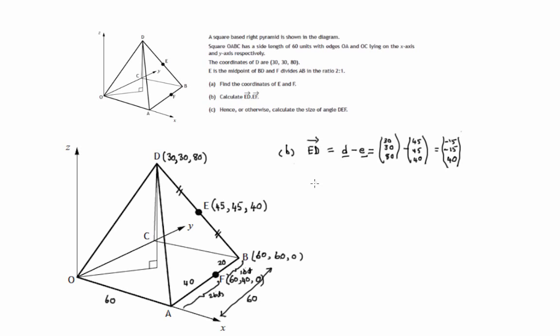Similarly, we'll do the coordinates of E to F. That's the position vector of F minus the position vector of E. Position vector of F: components 60, 40, 0. The components of position vector E: 45, 45, 40. So for x-coordinates, 60 minus 45 is positive 15. And 40 minus 45 is minus 5. And 0 minus 40 is negative 40 for the z-component.